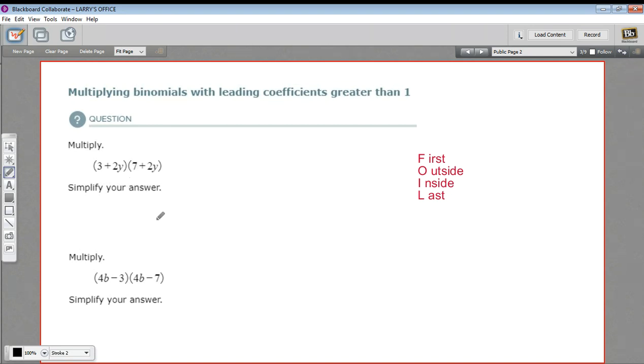When we multiply binomials, typically we follow FOIL. It's just a guide to help us remember to multiply all the pieces together that we need to. It stands for multiplying the first terms, then the outside terms, then the inside terms, and then the last terms.